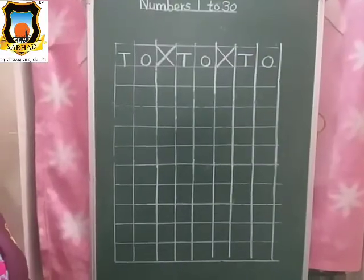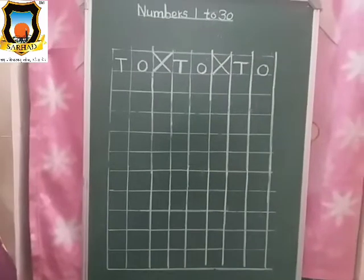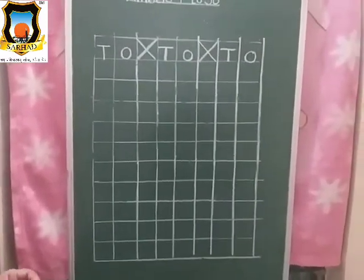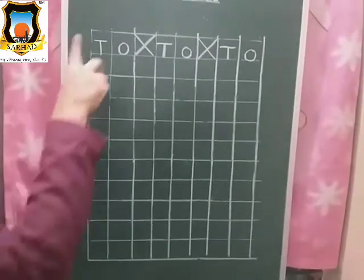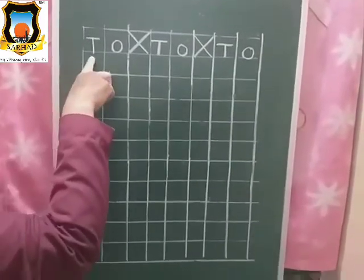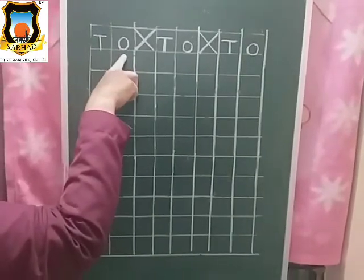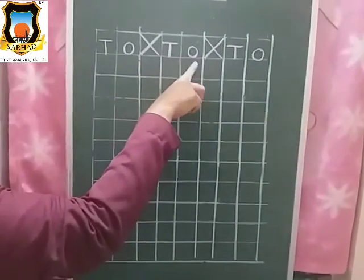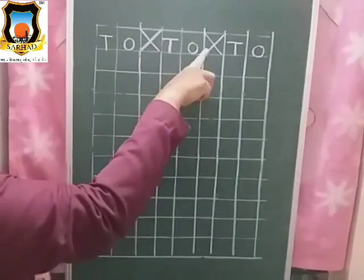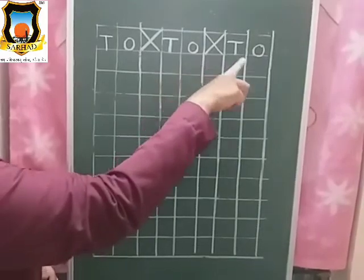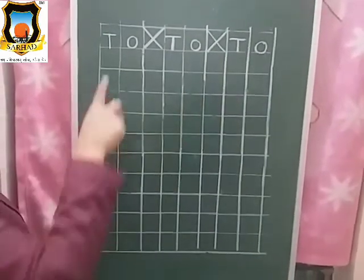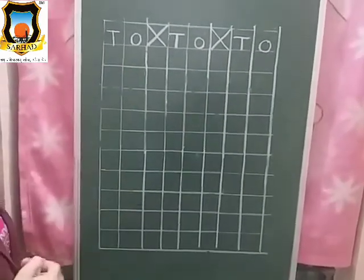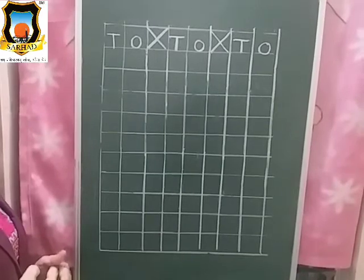we will start our 1 to 30 numbers with board writing first. So all of you look at the board. First we will write T-O then give a cross. Again write a T-O then cross and then write a T-O.